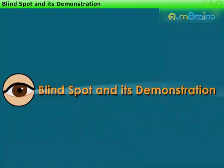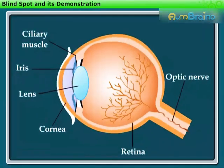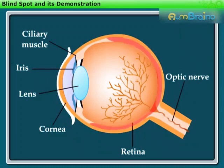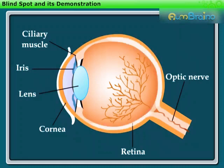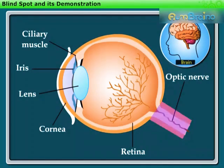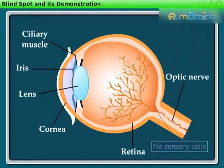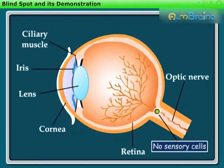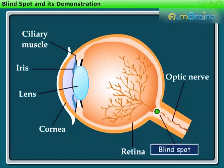Blind Spot and its Demonstration. We know that the retina contains several nerve cells. Sensations felt by the nerve cells are then transmitted to the brain through the optic nerve. But there are no sensory cells at the junction of the optic nerve and the retina, so no vision is possible at that spot. This is called the Blind Spot.